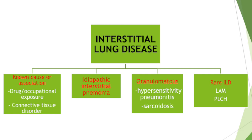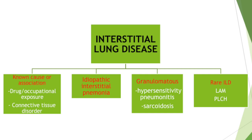Known causes include drugs like amiodarone, occupational exposure like pneumoconiosis, silicosis, and asbestosis, and connective tissue disorders like rheumatoid arthritis and systemic sclerosis. The second group does not have a known cause and so they are called the idiopathic interstitial pneumonias. The third is the granulomatous group — hypersensitivity pneumonitis and sarcoidosis belong here.